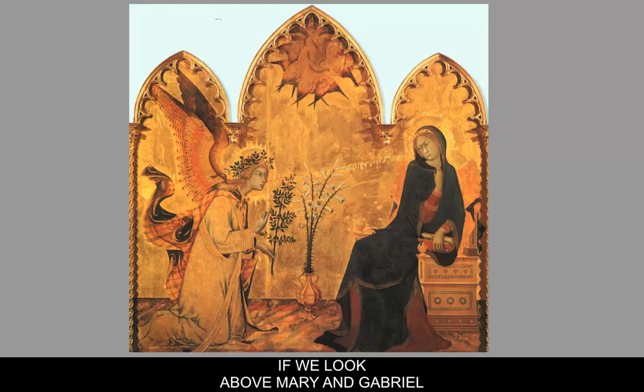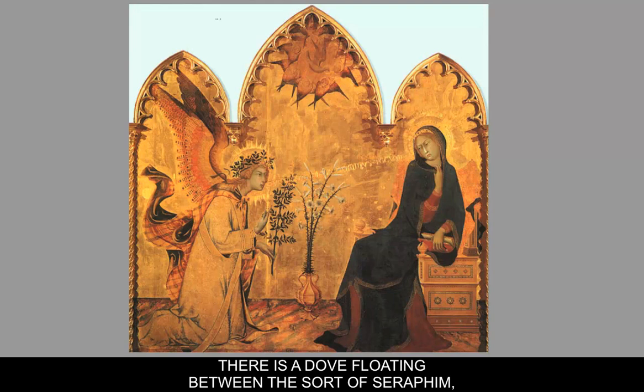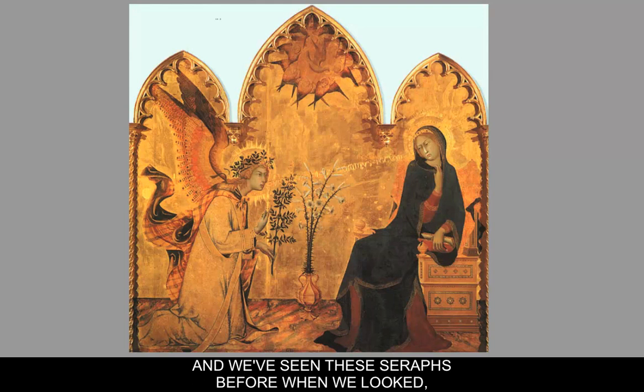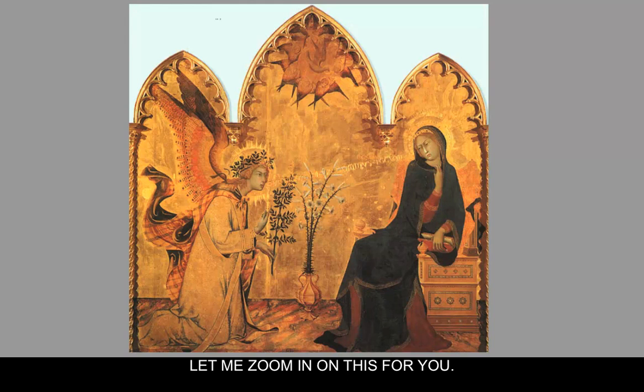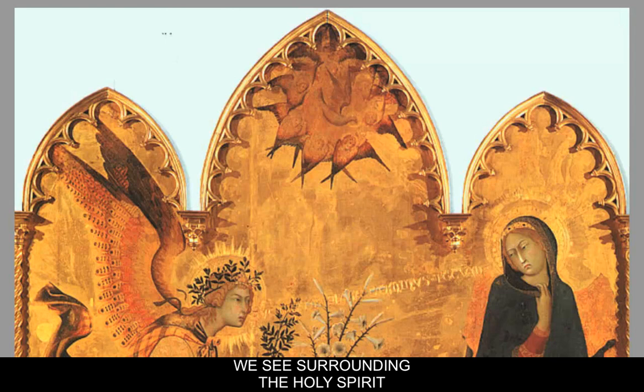If we look above Mary and Gabriel in the center bay of that tripartite — meaning three-part — division, you see an image with a dove floating between seraphim. We've seen these seraphim before when we looked at Giotto's painting and Bonaventura Berlinghieri when St. Francis was receiving the stigmata. In the center is the Holy Spirit, represented as the dove, and surrounding it are the seraphim, which are conducting the Holy Spirit down to Mary.